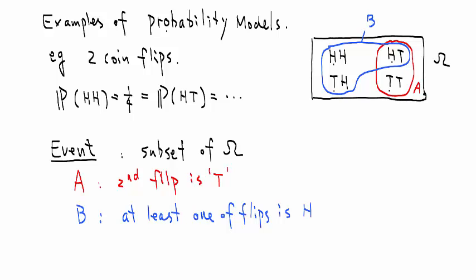Let's do one more. C. It says that you can define it very simply. C: Head-head. This is also an event. It says that both of my flips give me head. This set has only a single element called C. These are some examples of events.